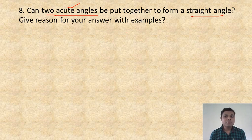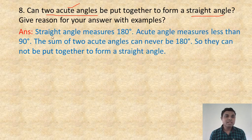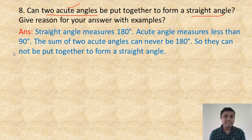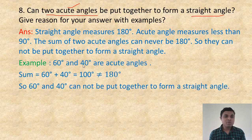Write the answer: a straight angle measures 180 degrees; an acute angle measures less than 90 degrees. The sum of two acute angles can never be 180 degrees, because if one angle were 90 and the other also 90, the sum would be 180 — but both are less than 90, so their sum will be less than 180 degrees. Example: 60 degrees and 40 degrees are acute angles; their sum is 100 degrees, which is not equal to 180 degrees. So they cannot be put together to form a straight angle.